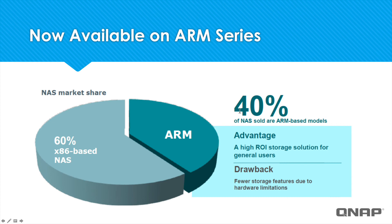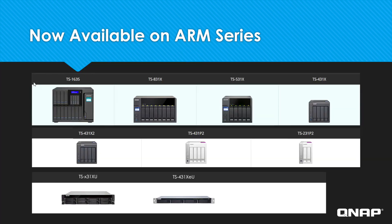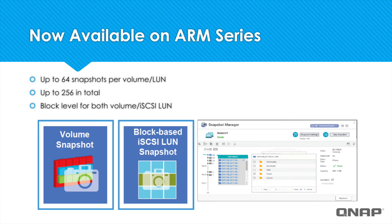About 40% of our NAS units that are sold are powered by an ARM processor. Our ARM processor NASes are a popular, cost-effective option for home and small business users. Now we are making available the invaluable feature of Snapshot even on our ARM processor units. On ARM processor QNAPs you'll be able to take up to 64 snapshots per volume or LUN and up to 256 snapshots in total.